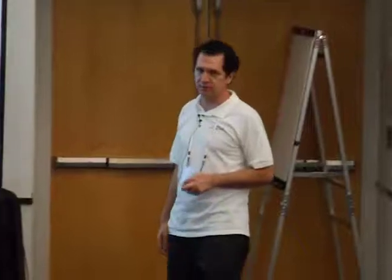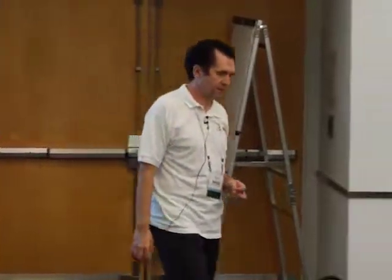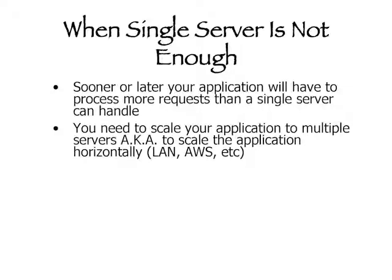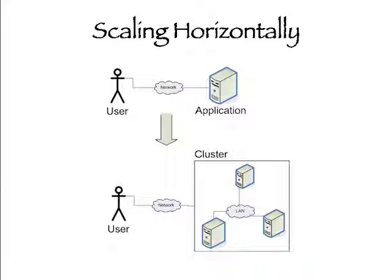Sooner or later you will exhaust the resources of your single server, and you have no choice but to scale to multiple servers — also known as scaling horizontally. You can scale inside your local data center using a local area network, or you can scale in Amazon Cloud. Resources are limited, and that gives you the idea of going from a standard architecture to a clustered one.